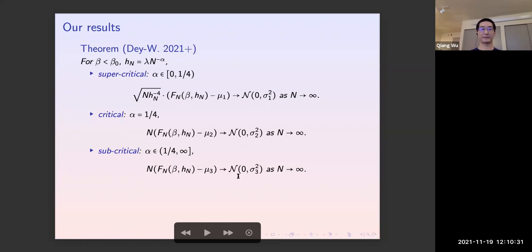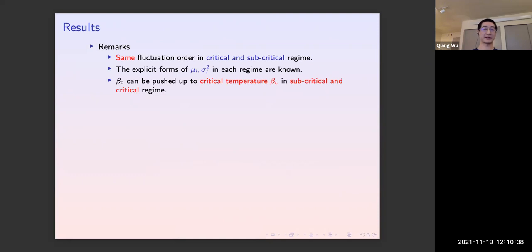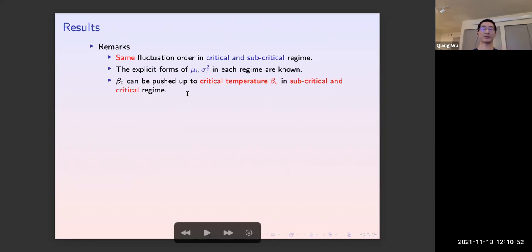In the critical and subcritical regimes the fluctuation order is the same — just a constant order. In the supercritical regime it becomes square root of n times h to the power four. For the subcritical and critical regimes we can push beta_0 all the way to the critical temperature, but in the supercritical case this is much harder.